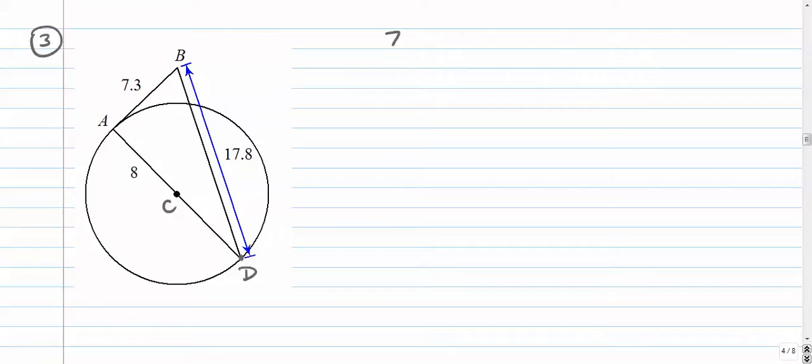So I have 7.3² + something² equals 17.8². That's the goal here. The real question is, what is that something? It's going to be the other leg of our triangle. So we look at our triangle and I've got an 8 right here. That's only the radius though, which means this is 8 as well. So the whole segment is 8 + 8, which is 16.